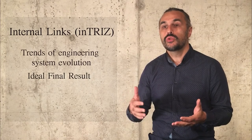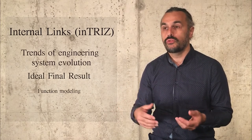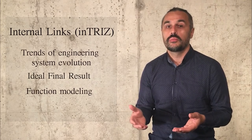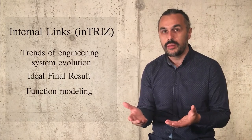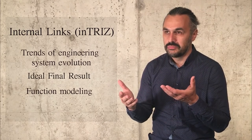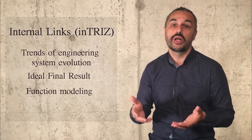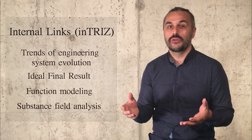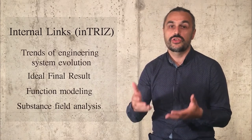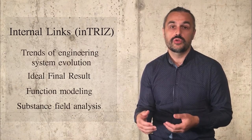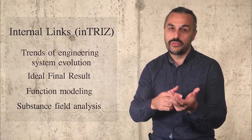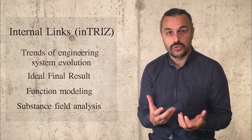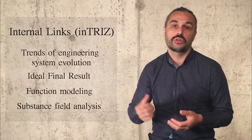Some contradictions can be found when doing functional modeling: the coexistence of a useful function and a harmful function can be treated as a contradiction, because we need an element to perform a good function but at the same time it generates some harmful, unwanted function. Similarly, in substance-field analysis, we often model a situation where there is a useful action and a harmful action that should be blocked — this can also be observed as a contradiction. So ideality, trends of engineering system evolution, substance-field analysis, and functional modeling are all strongly linked with the concept of contradiction.